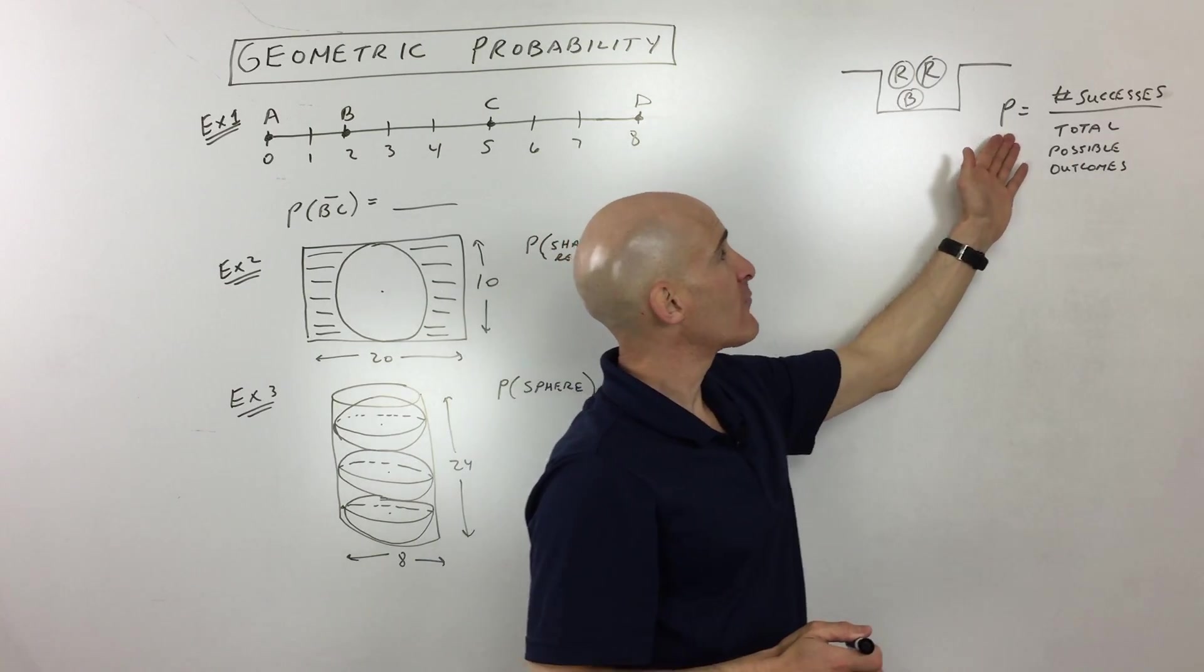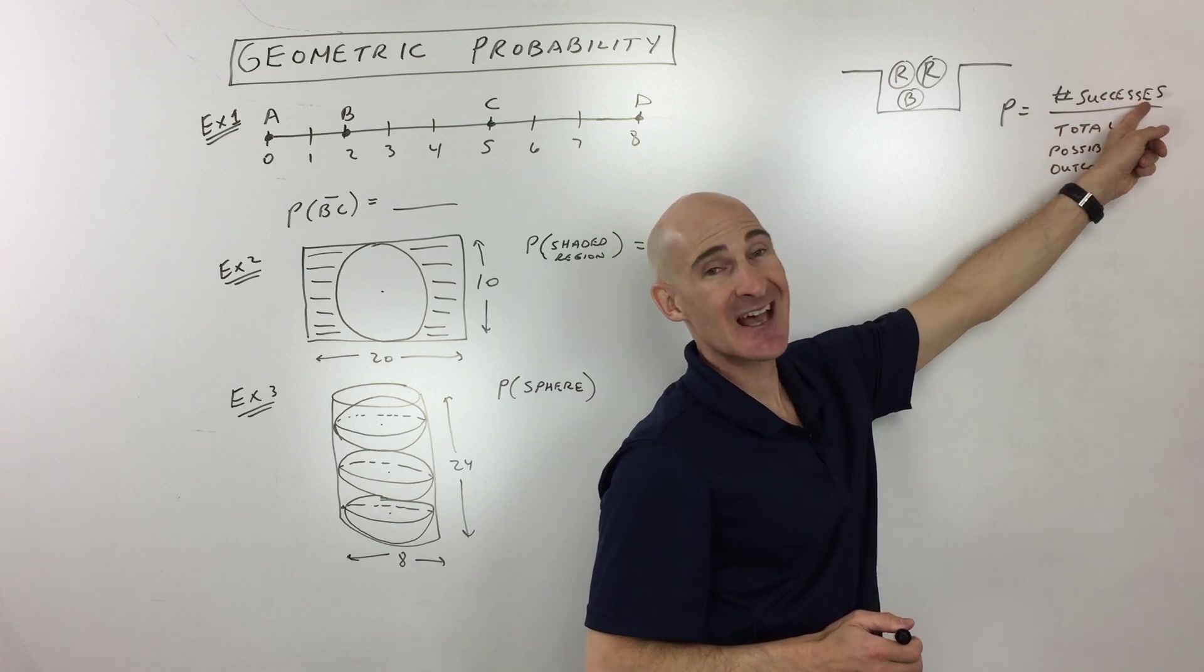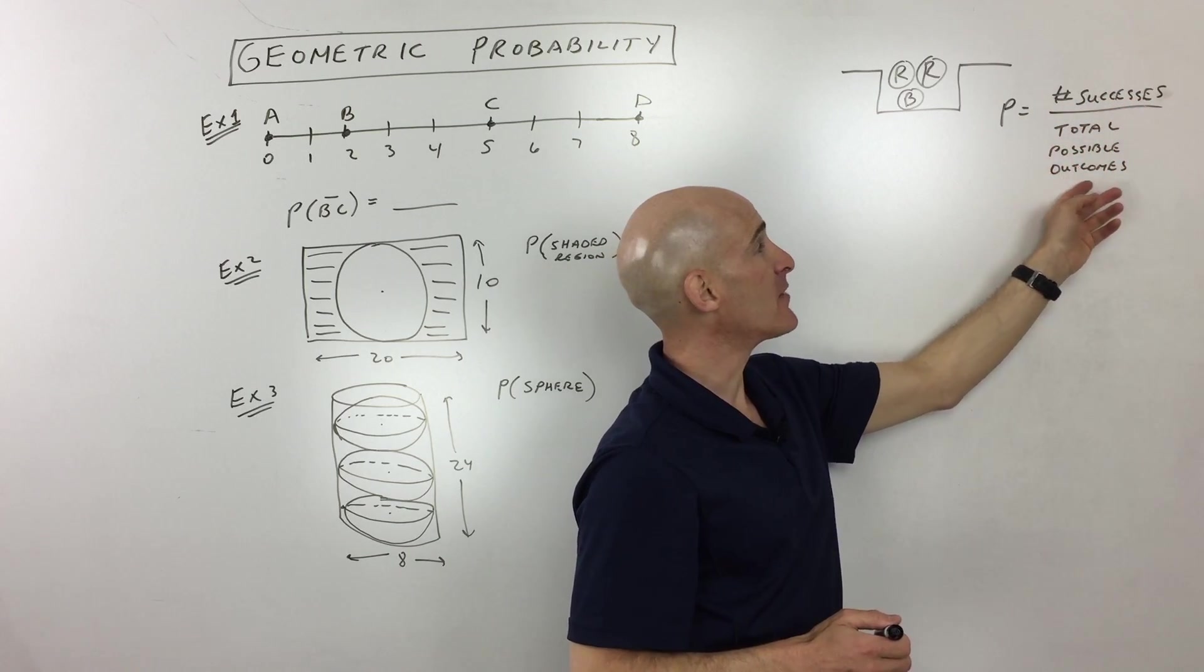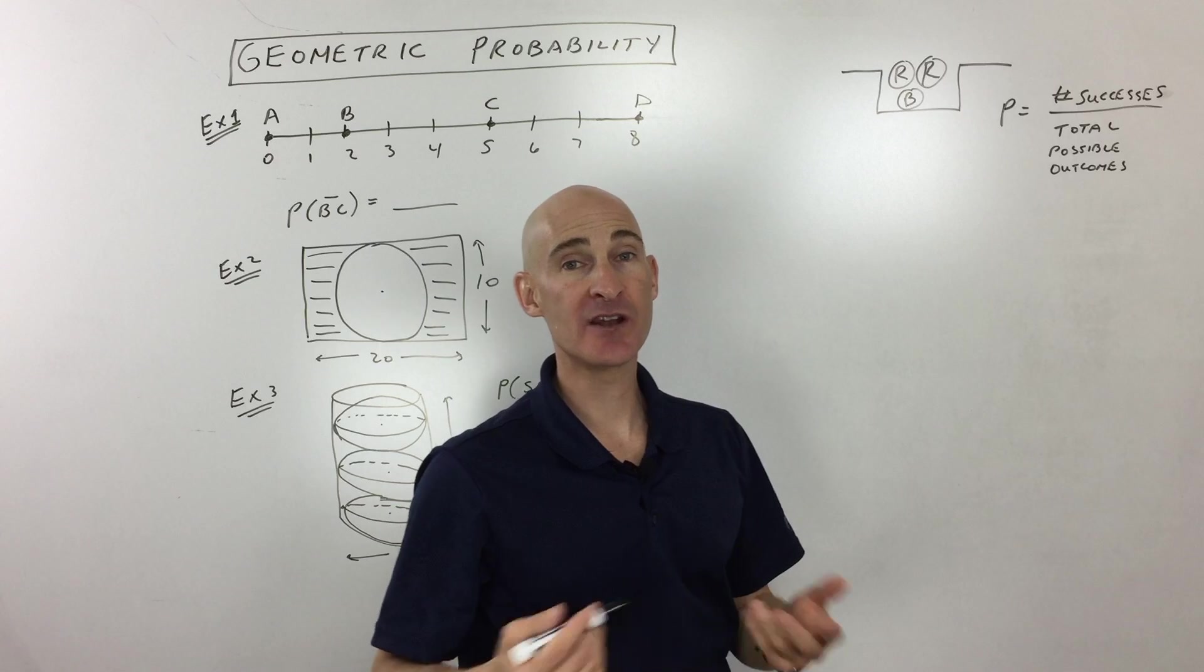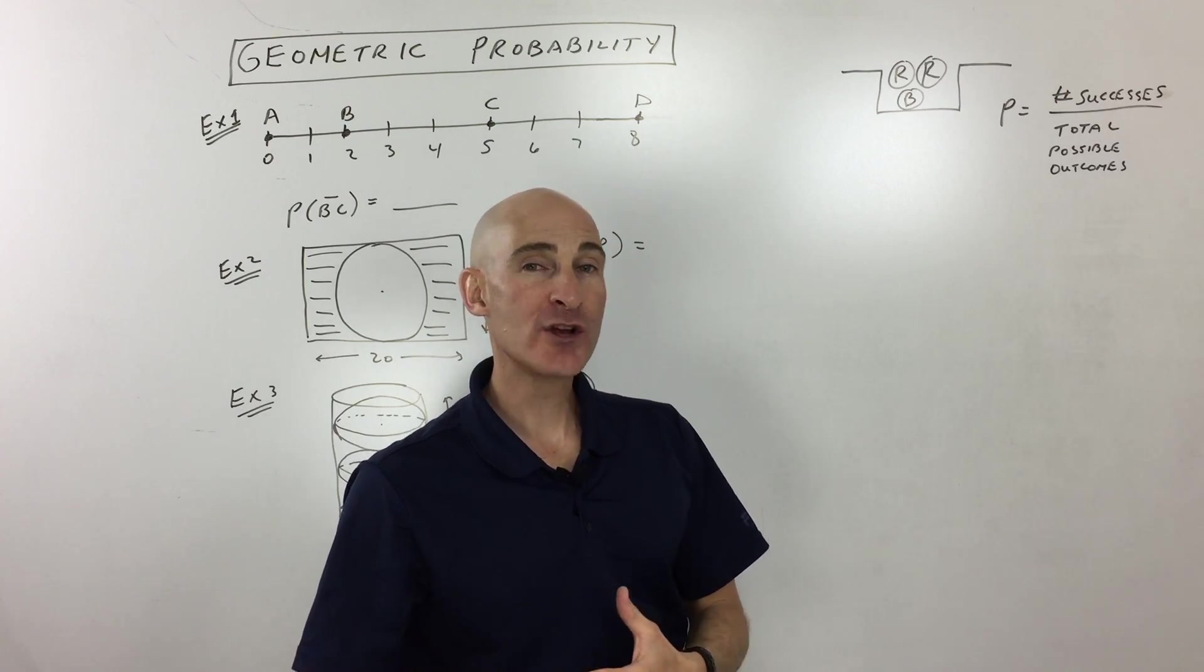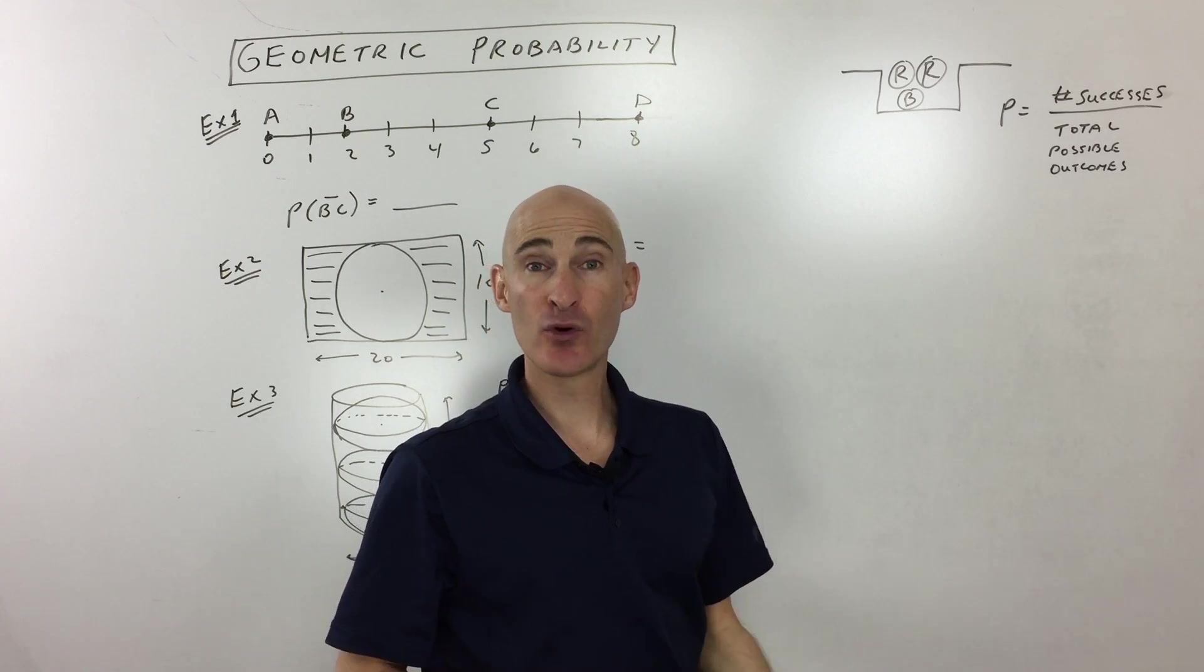Well, when you think of probability, it's the number of successful outcomes divided by the total possible outcomes. In other words, I like to think of it as what you want divided by the total things that could occur.